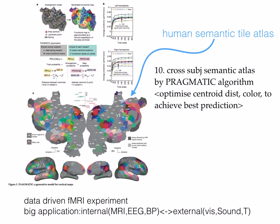The final cortical atlas looks like this. To make it, you need two kinds of important information: the first is the tile position, and the second is the tile color, which represents the meaning of the tile. The authors proposed a pragmatic algorithm with two parts: the arrangement model, which tries to make the best position prediction, and the emission model, which gives each tile the best color — that is, the meaning. You then optimize the location and the meaning for each tile, and finally this map can best predict the real observed semantic map.